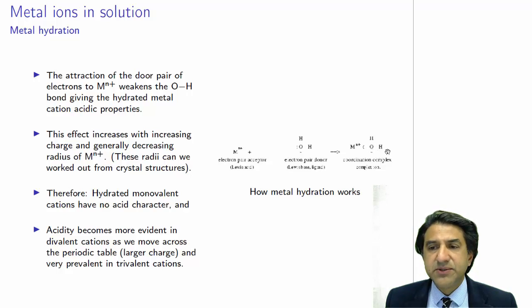Which means to say if this OH bond is weakened, this aquated species will become acidic. Because the hydrogen is more likely to drop off. Remember, an acid is something which is a hydrogen ion donor in the Bronsted-Lowry theory, H+.